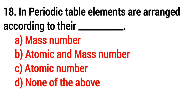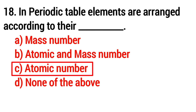Question 18: In the periodic table, elements are arranged according to which number? The answer is Option C: atomic number.